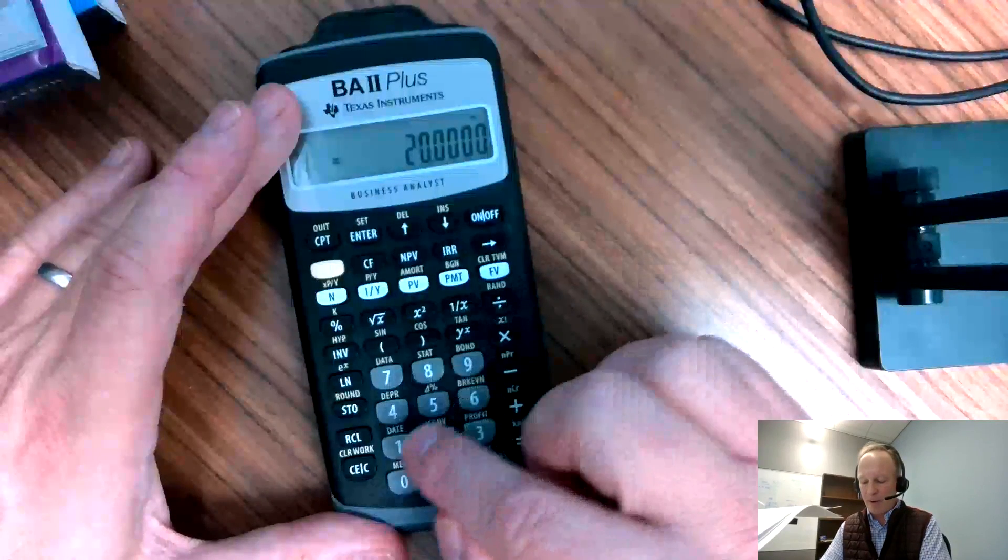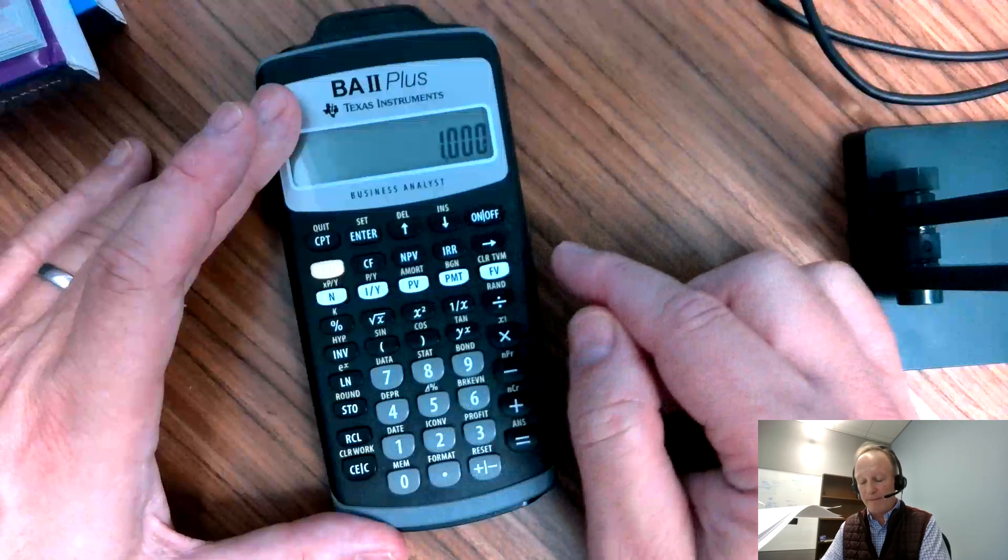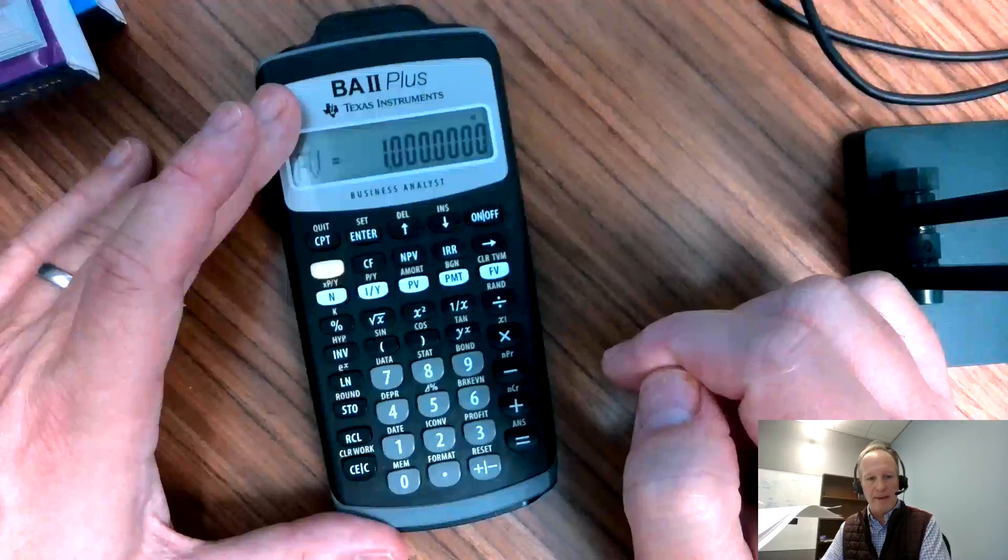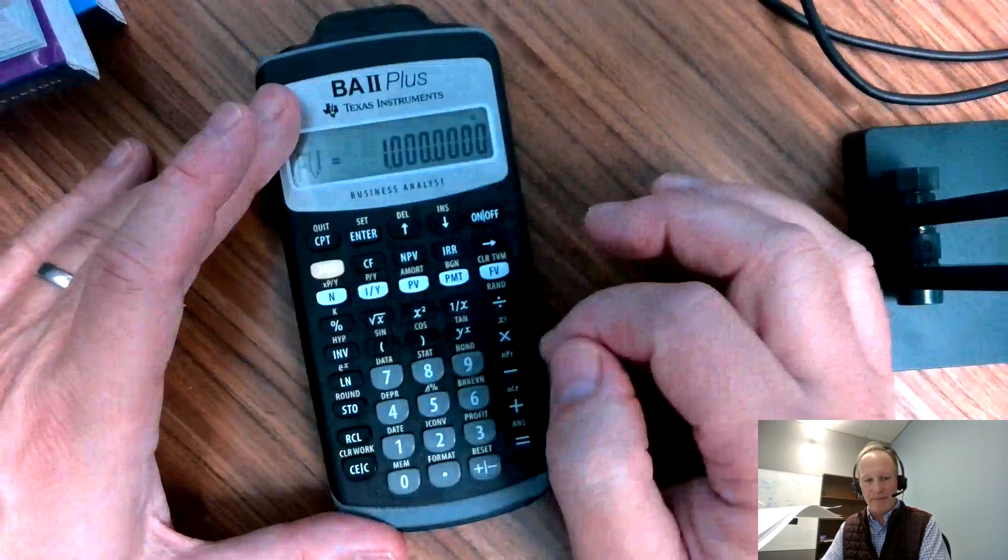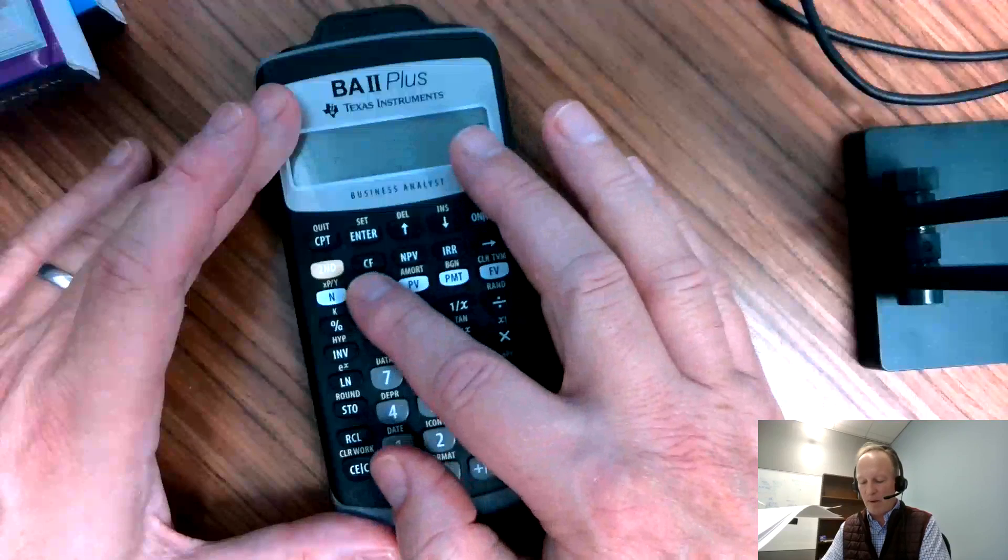Okay, next I'm going to do par. Par is 1,000. Par is my future value, so that happens in 10 years. So I'm going to hit FV. And then my I/Y, my interest rate, which is set by the market, I'm going to hit 5 I/Y.